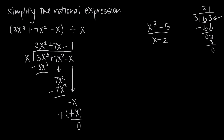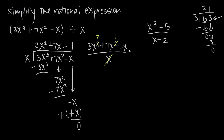This should make sense because if we take the original problem as a fraction — 3x cubed plus 7x squared minus x divided by x — we can cancel one x out of every term, since each term has an x. Canceling x from each term leaves us with 3x squared plus 7x minus 1, which is exactly the answer we got.